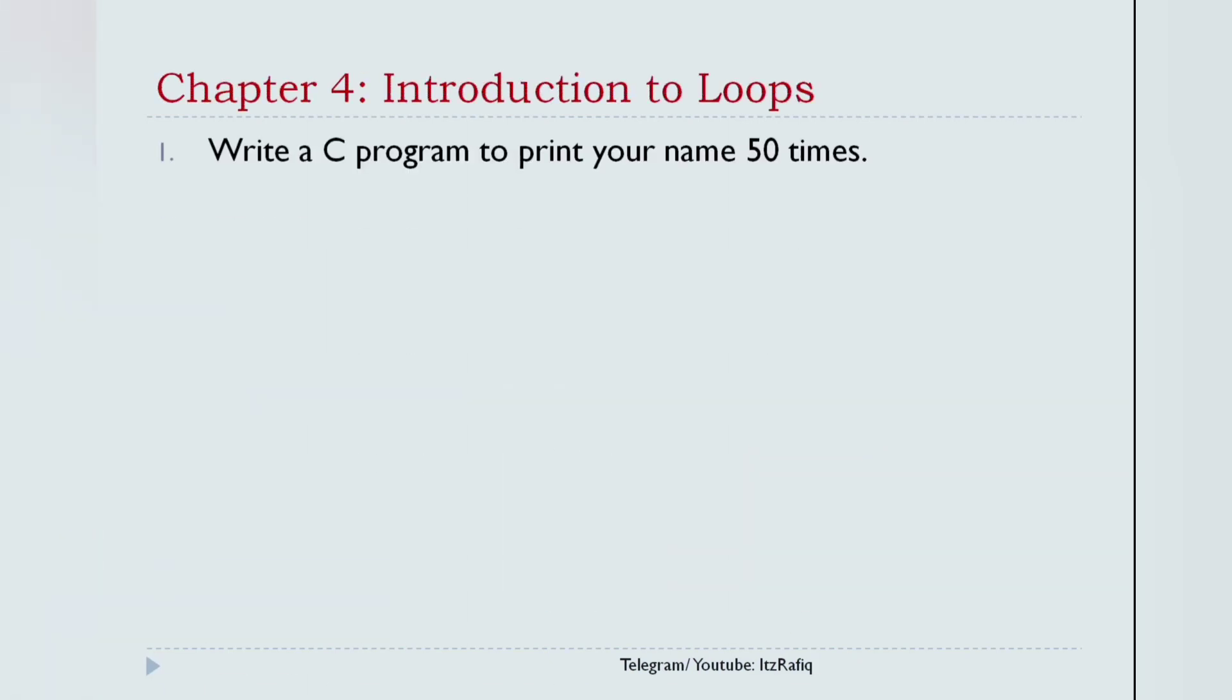In chapter 4, you will see these programs. First, write a C program to print your name 50 times, 10 times, 100 times like this way. Sometimes it will directly give you the question, and sometimes it will mention also the type of the loop, like using while loop, using do-while, or using for loop. So you practice with all three types of the loop.